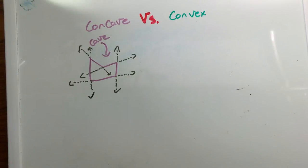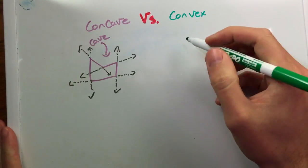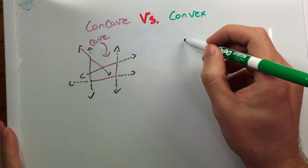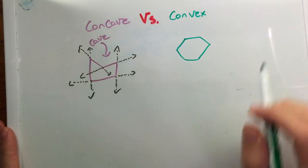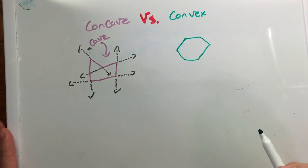So a convex polygon is a little different. A convex polygon, we have something like this. Let me just draw a little polygon here. And again, imagine all my little segments are straight. That would be an example of a convex polygon.